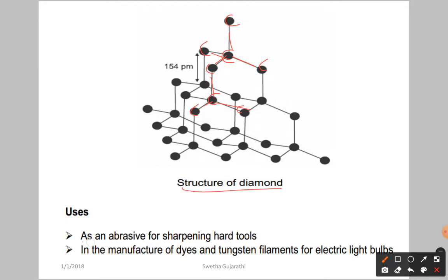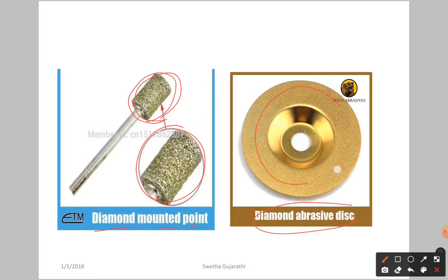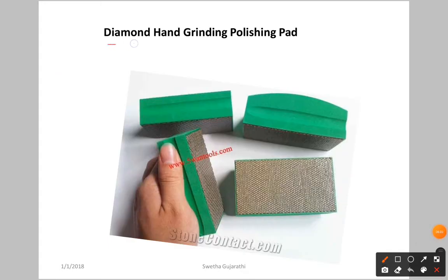Diamond is used as an abrasive for sharpening hard tools, having a hard surface area. You can see diamond-mounted points, diamond abrasive discs, and diamond hand grinding polish pads — all used for smoothing surfaces because of diamond's extreme hardness.